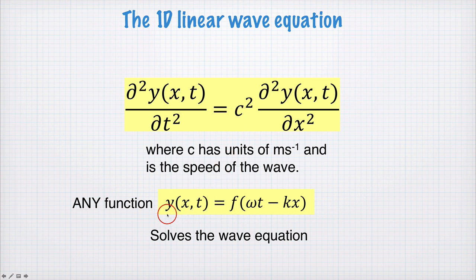Now, surprisingly perhaps, any function y of x and t of this form, omega t minus kx, solves the wave equation. Omega and k are just constants. But anything with this form of something times t minus something times x will solve the wave equation. In fact, it doesn't even need to be negative here. It can be plus. Just this linear addition of time and space, some function of that will solve the wave equation.